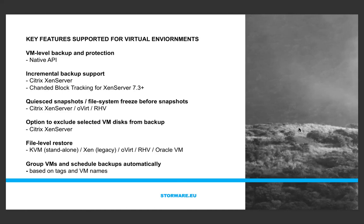vProtect scans periodically for inventory changes in your infrastructure and can automatically group VMs or assign them to groups based on names or tags. VMs can be automatically assigned or removed from groups, and if a VM no longer exists it is also automatically removed. So if you have a consistent naming convention or tags, you can manage it from your familiar administrative console in RHV or Citrix, without logging into vProtect every time.